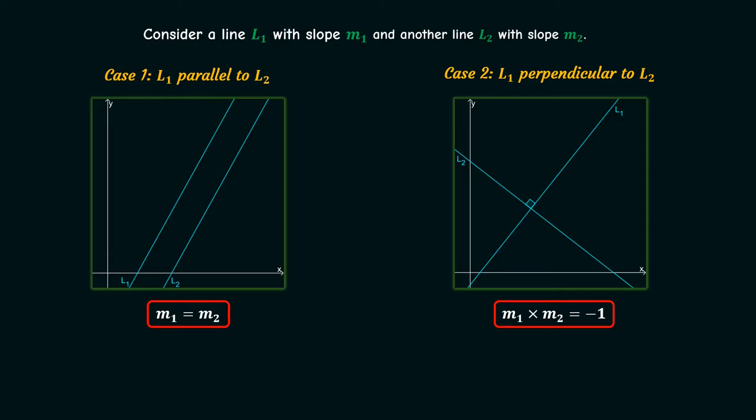We can also say that the slopes are negative reciprocals of each other, i.e., m1 equals minus 1 by m2, and similarly m2 equals minus 1 by m1. Let's try solving some problems using this.